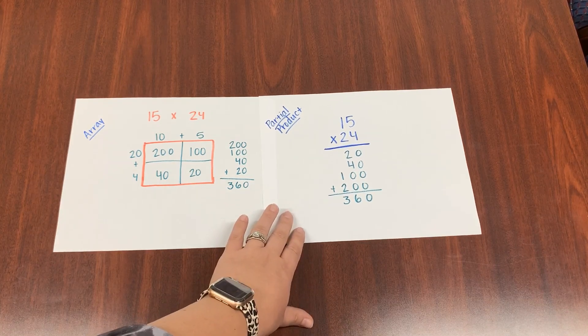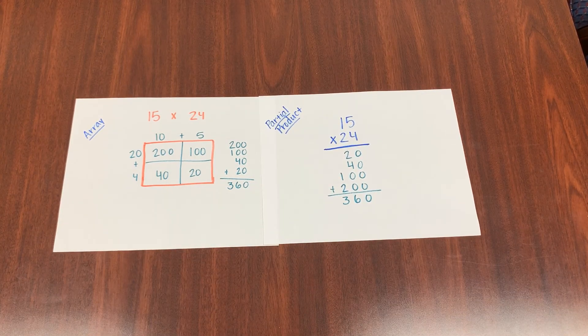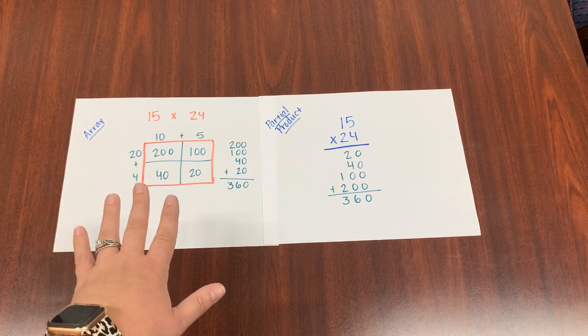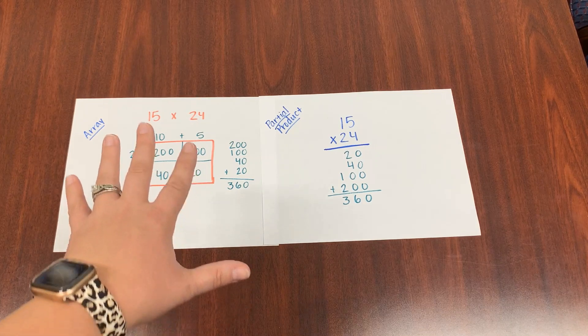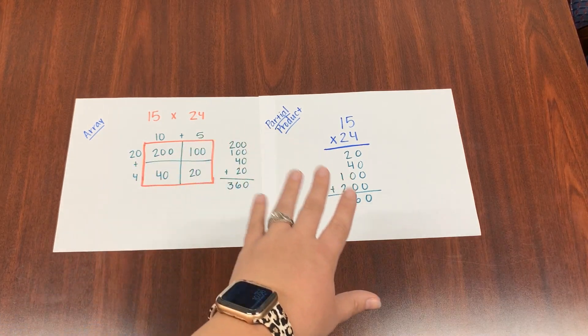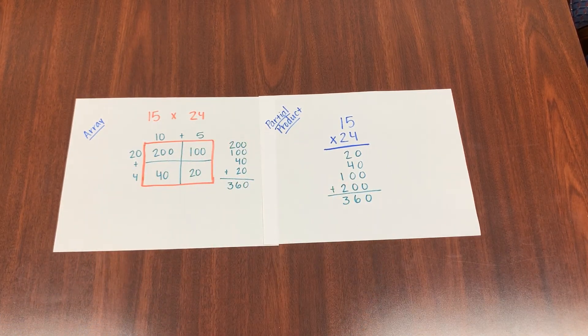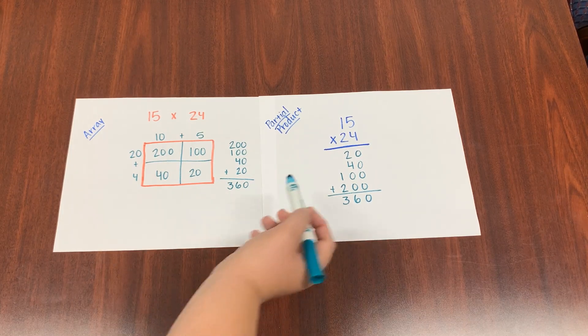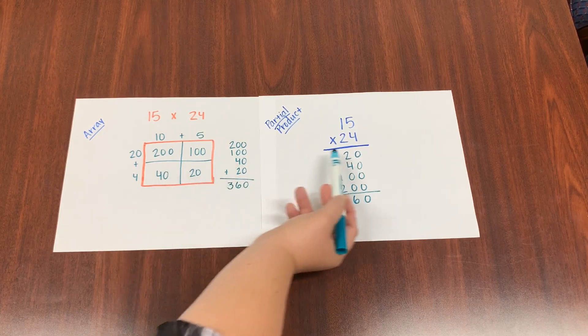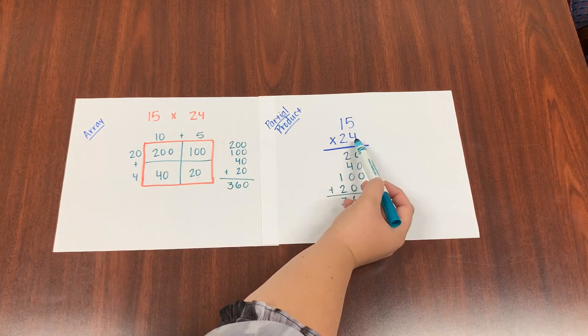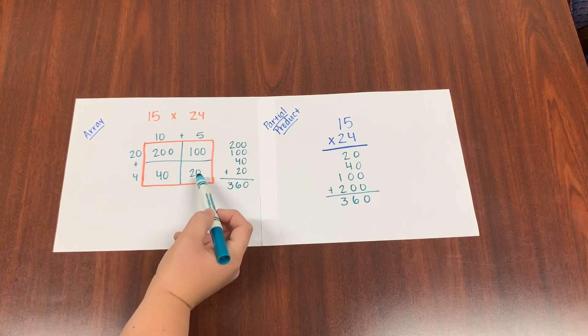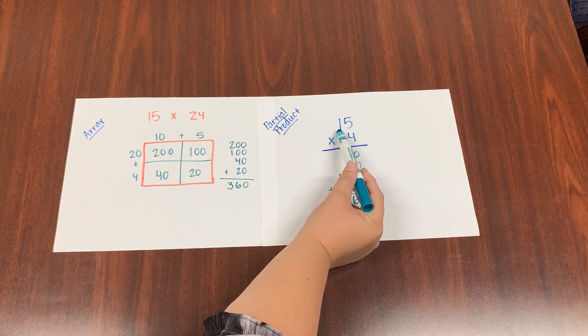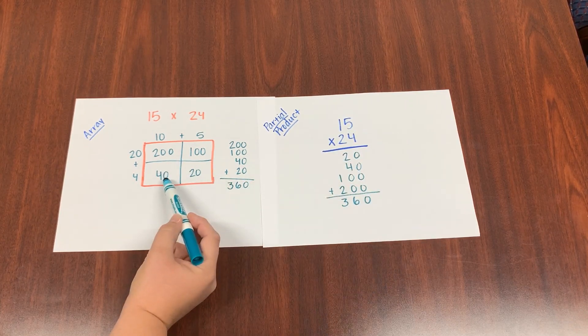Over here, I'm using the partial products method. And this one is very close to the standard algorithm. You can kind of see the progression. It starts out more with your boxes and your expanded form, and then it's starting to mutate over a little bit closer to that regular standard algorithm. We're still doing the same thing we did over here. Notice how the numbers match. 5 times 4 was 20. There's a 20 right here. 4 times 10, because that one's in the tens place, is 40. Here's my 40.